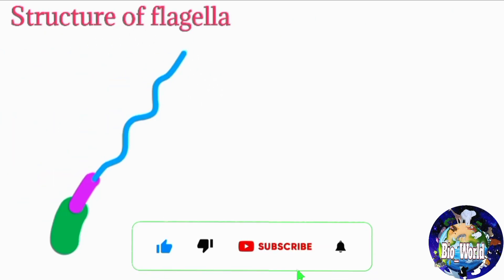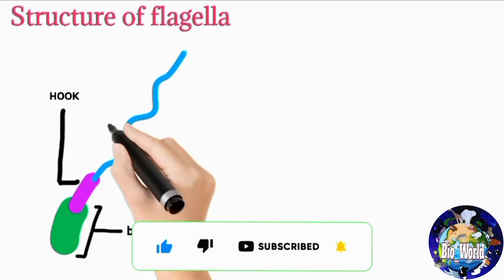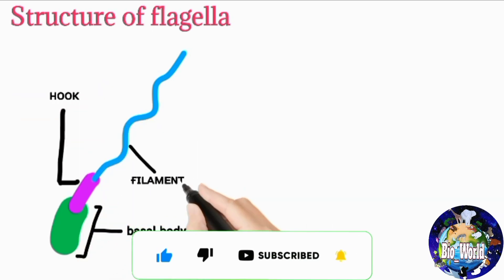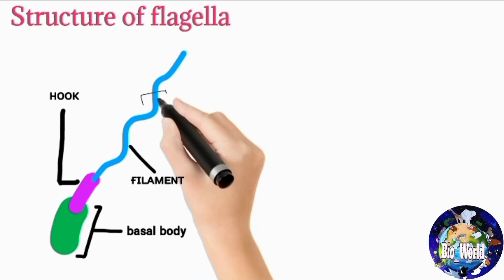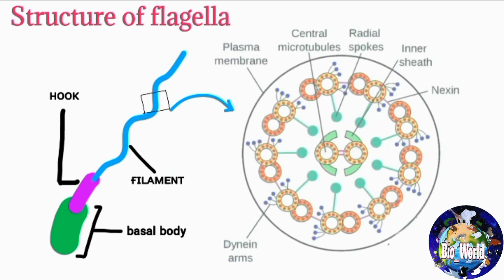The basic flagella structure is divided into three parts: the basal body, the hook, and the filament. The hook is a broader area present at the base of the filament, connecting the filament to the basal body. The filament is a thin hair-like structure arising from the hook.